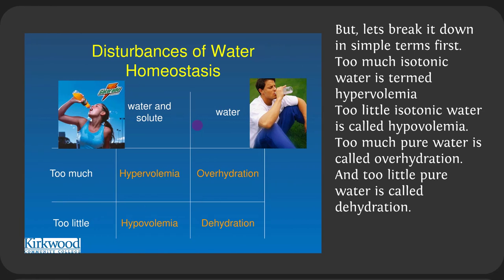There are four main conditions when it comes to water and solute. You can have too much water and solute, too little water and solute, too much pure water, or too little pure water. Too much isotonic water and solute is called hypervolemia; too little is called hypovolemia. We have different terms for pure water: too much pure water is overhydration, and too little pure water is dehydration.